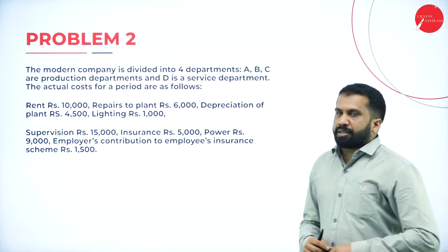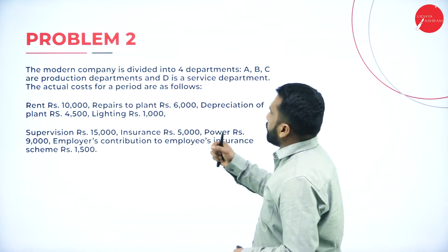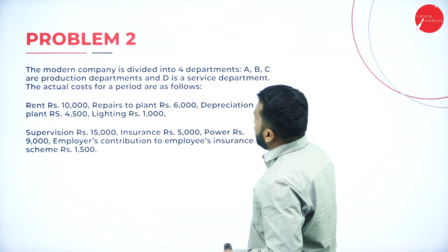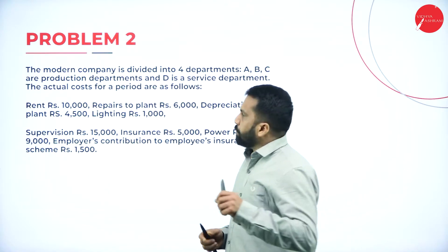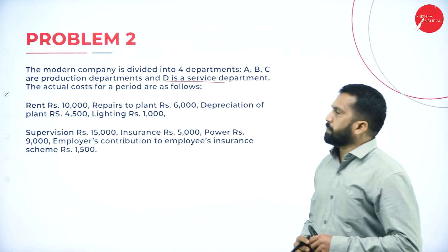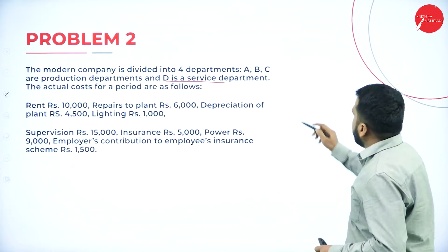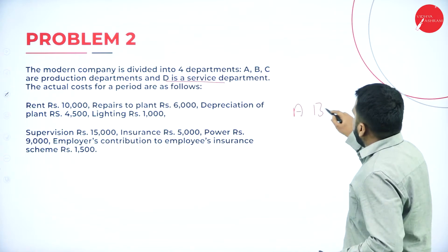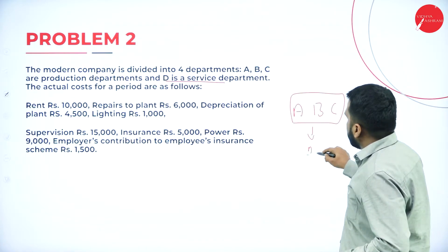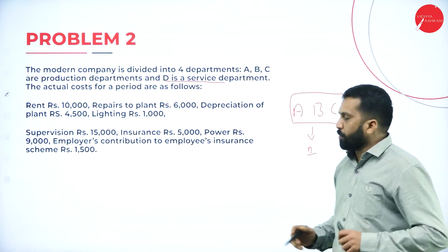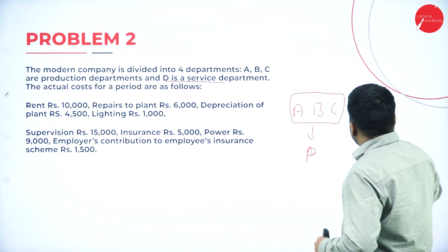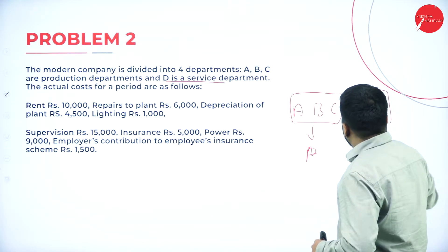Your problem number 2. In this, the modern company is divided into 4 departments. A, B, and C are production departments and D is a service department. Total 4 departments are there — A, B, C are called production departments, and D is called the service department.